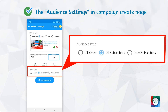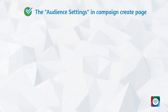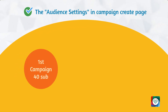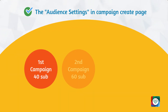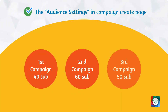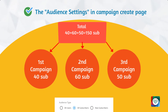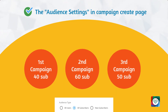To understand more clearly, let's consider that I've created three subscribe campaigns: the first one for 40 subscribers, the second one for 60 subscribers, and the last campaign was for 50 subscribers. So for my channel, new subscribers means 50 users, all subscribers means those 150 users, and all users means all the users of the app who are currently using our app.